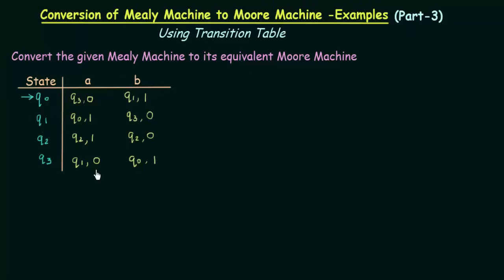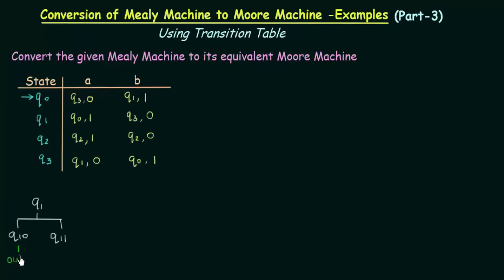q1 is here giving output 0, and q1 in this column is giving output 1. So we see that q1 is giving different outputs in these two columns. Whenever you find a state that is giving two different kinds of outputs, you have to split this state into two states. So we had q1 and now I will split it into two states which I will call q10 and q11. q10 will be used for output 0 and q11 will be used for output 1.